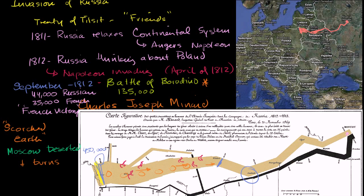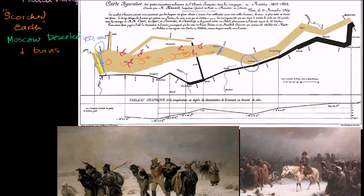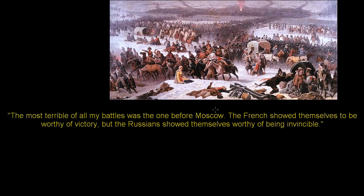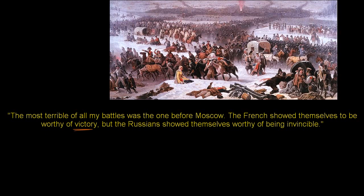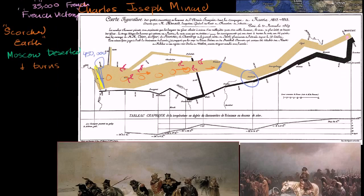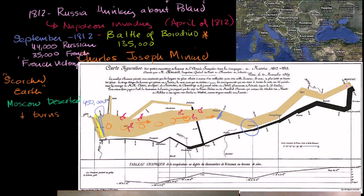By Napoleon's own accounts, he gave this quote: 'The most terrible of all my battles was the one before Moscow. The French showed themselves to be worthy of victory, but the Russians showed themselves worthy of being invincible.' With no one to recognize Napoleon or feed his troops, in a worthless burned Moscow, he decides to turn around — especially because the Russian winter is approaching.